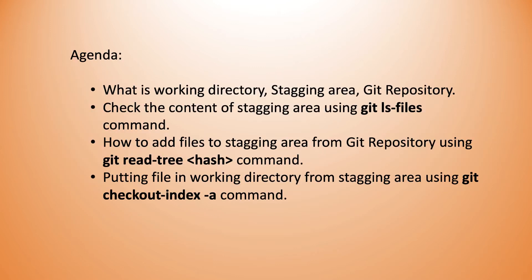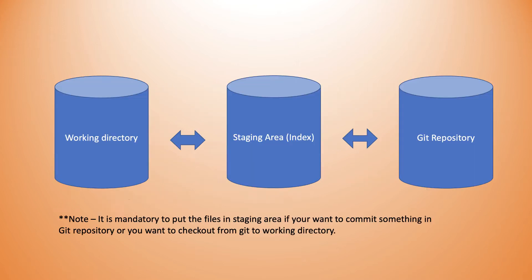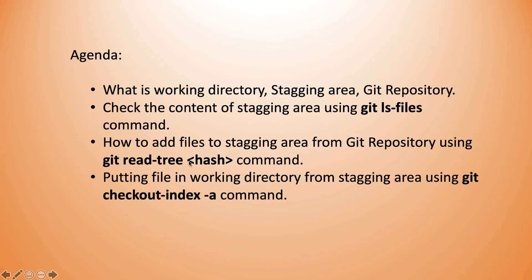Now let's dive deep and cover today's agenda. We'll be working with working directory, staging area, and git repository. We'll see how to check how many contents are present in a staging area with the command `git ls-files`. Then we'll see how to add files into the staging area from the git repository using the command `git read-tree <hash>`. Then we'll see how to move files to the working directory from the staging area using the checkout command: `git checkout-index -a`.